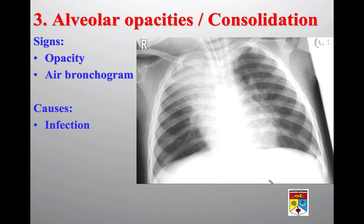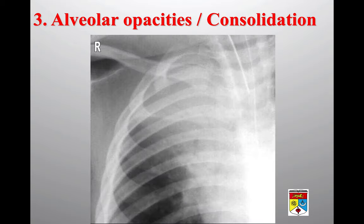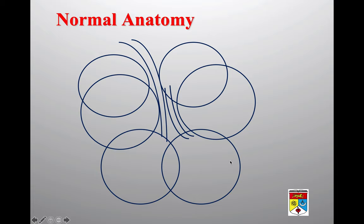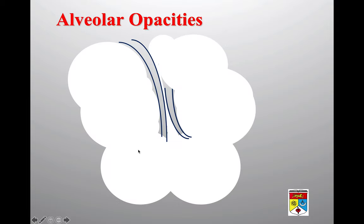Alveolar opacity is more patchy-looking and opaque — the pathology is within the alveoli. We see opacity with an air bronchogram. It can be caused by bacterial, viral, or fungal infection. The air bronchogram represents airfield branching bronchioles within the consolidation: normally the bronchiole ends in the alveoli, but in alveolar opacity the alveoli are opaque and the airfield bronchiole appears within the opacity — indicating consolidation, most often pneumonia.